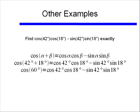Well we know what the cosine of 60 degrees is — the cosine of 60 degrees is equal to 1 half. So the cosine of 42 degrees times the cosine of 18 degrees, minus the sine of 18 degrees, is exactly equal to 1 half.